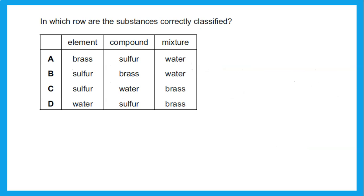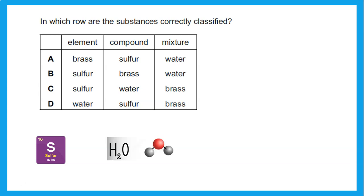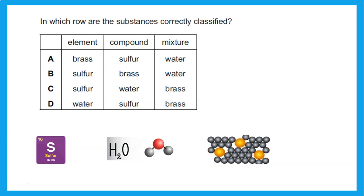In which row are the substances correctly classified? We need to identify which is an element, which is a compound, and which is a mixture. Sulfur: anything found in the periodic table is an element — all atoms are sulfur atoms, so it's an element. Water is made up of two hydrogens and one oxygen, so water is a compound. Brass is an alloy — alloys are mixtures of different types of metals — so brass is a mixture. The answer is C.